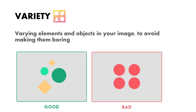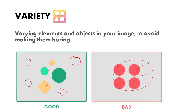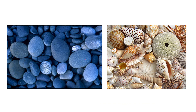Next is variety. Variety means using varying elements and objects in your image to avoid making it boring. Imagine if you simply kept all green circles or just one rectangle kite shape — it would be boring. Using multiple shapes with different colors makes it interesting to look at. If the same element is used multiple times without any variety, it becomes really boring, even though repetition can be used with some variety.